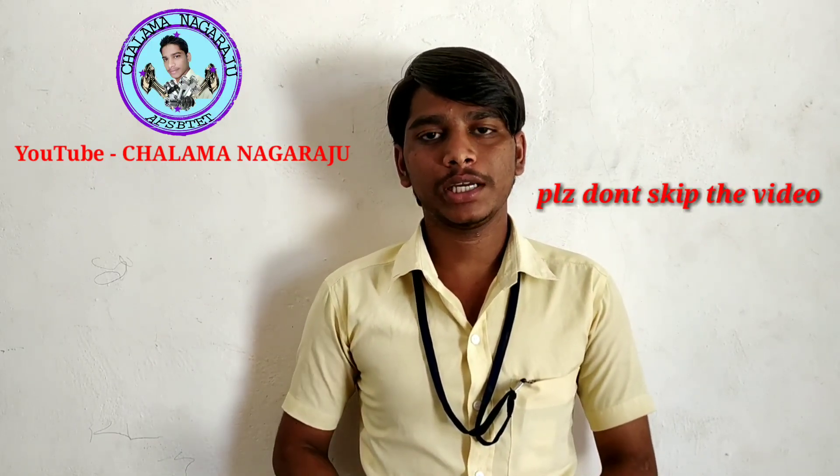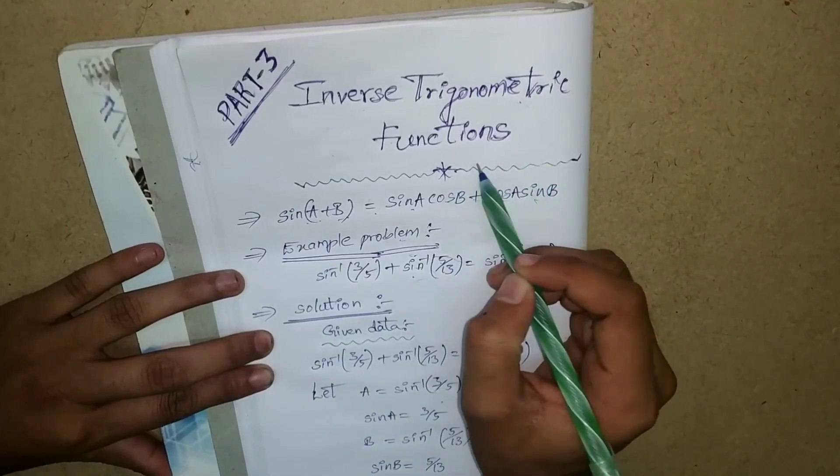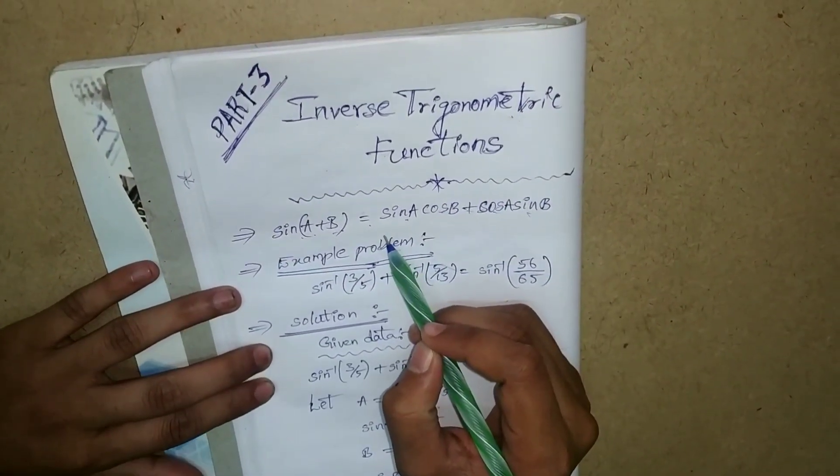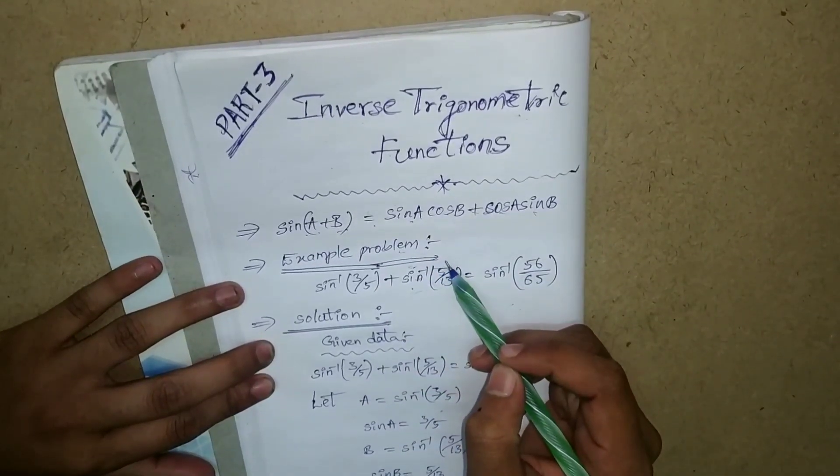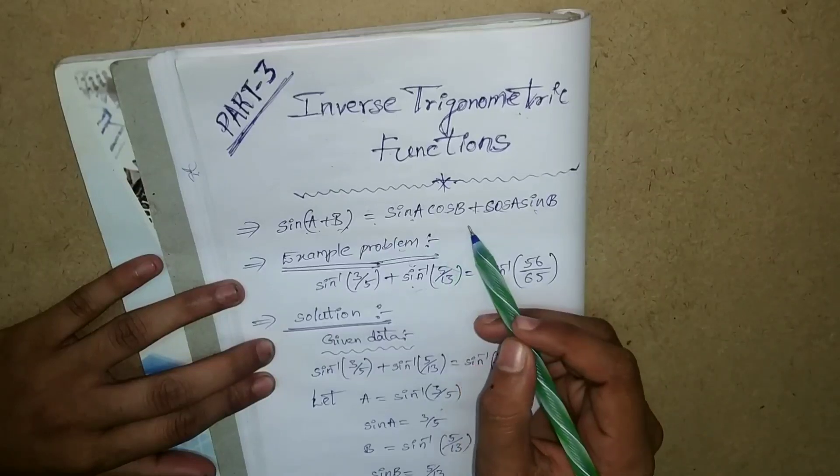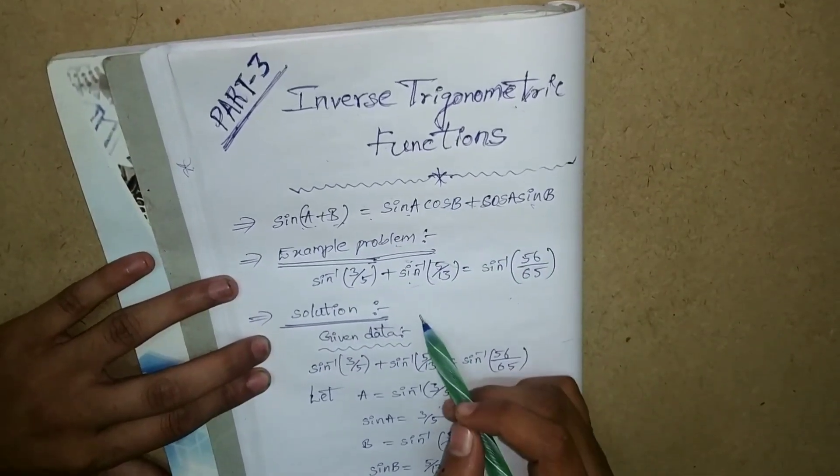We will use the sin a plus b formula. In the inverse trigonometric functions, we will use the sin a plus b formula to solve problems. We will also use the Pythagoras theorem. So, the sin a plus b formula is: sin a cos b plus cos a sin b. Now, example problem.